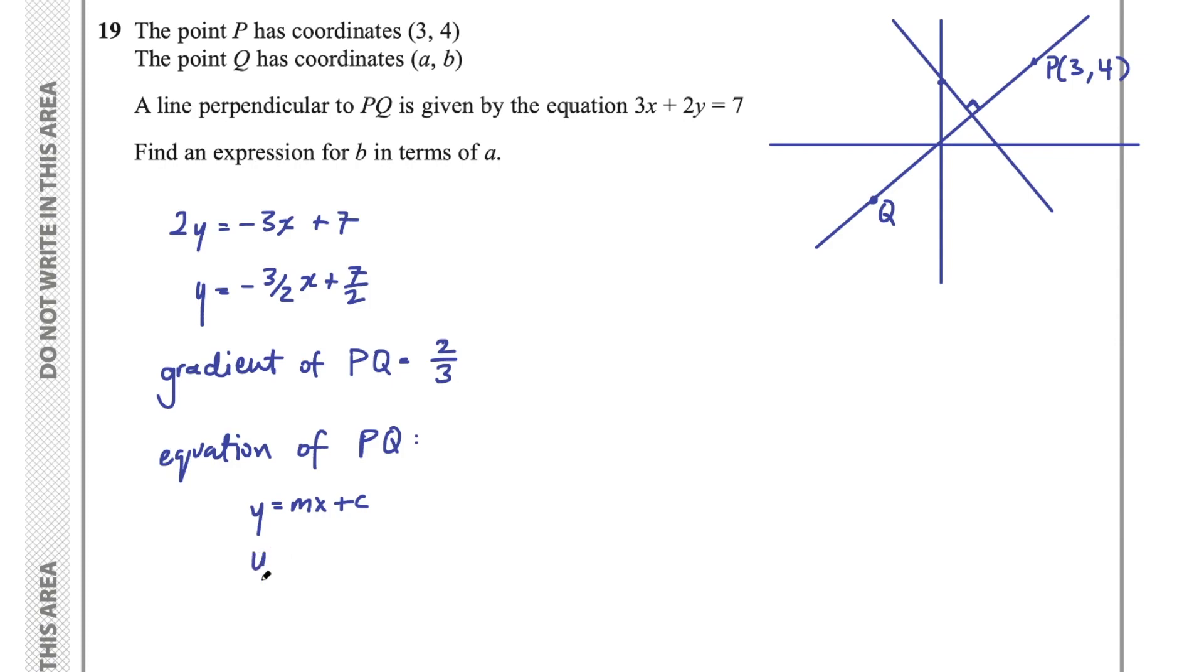This is going to be y equals 2 thirds x plus c, and now our job becomes to find c. There's a couple ways you can do this.